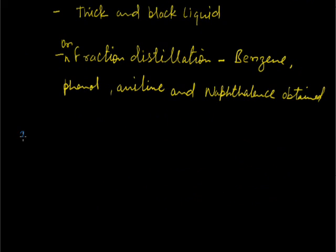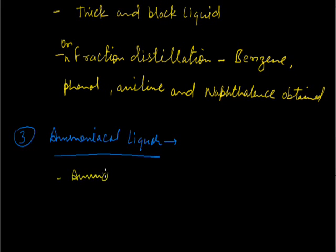The next important product is ammoniacal liquor. When coal undergoes destructive distillation, one of the products formed is ammonia. When ammonia is dissolved in water, it gives an aqueous solution of ammonia, that is ammonium hydroxide solution. It is known as ammoniacal liquor.